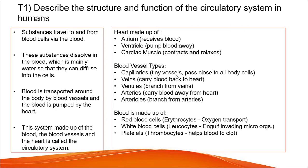This system, made up of the blood, the blood vessels, and the heart, is called the circulatory system. The heart is made up of the atrium, the ventricle, and the cardiac muscle. The blood vessels include capillaries, veins, venules, arteries, and arterioles. The blood is made up of red blood cells (erythrocytes) which deal with oxygen transport, white blood cells (leukocytes) which engulf invading microorganisms, and platelets (thrombocytes) which help blood to clot.